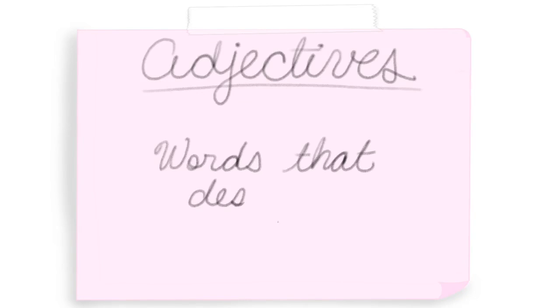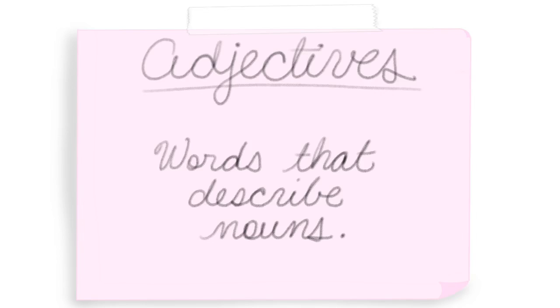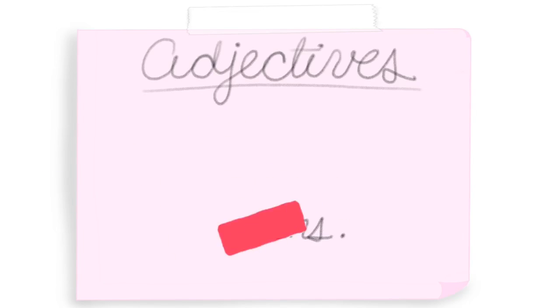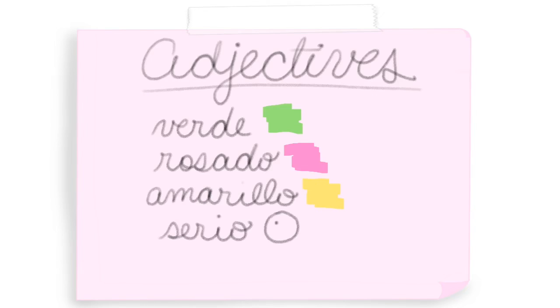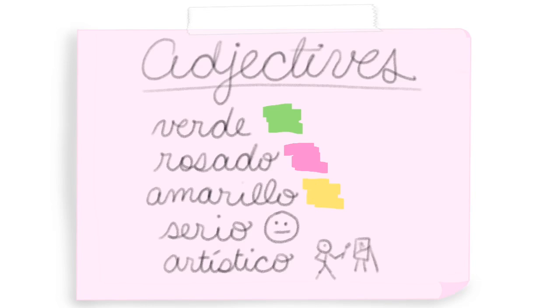Adjectives are words that describe nouns. Here are some examples of adjectives in Spanish: verde, rosado, amarillo, serio, artístico.